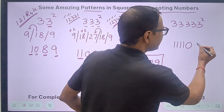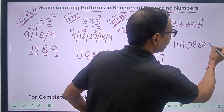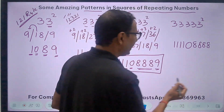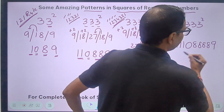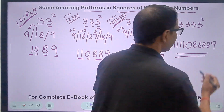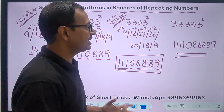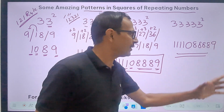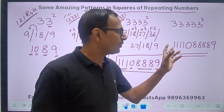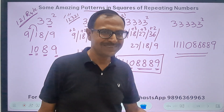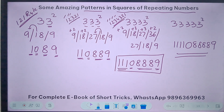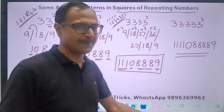So the pattern for 33333 squared begins with four 1s, then four 8s, and ends with a 9. Checking on the calculator: 33333 squared equals 1111088889. An amazing pattern particular to the repeating 3s!